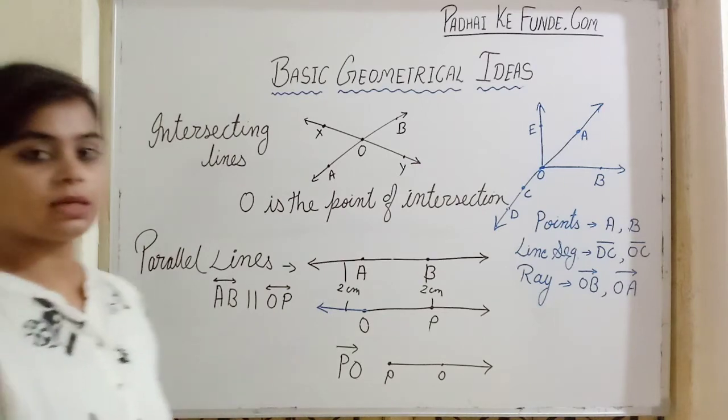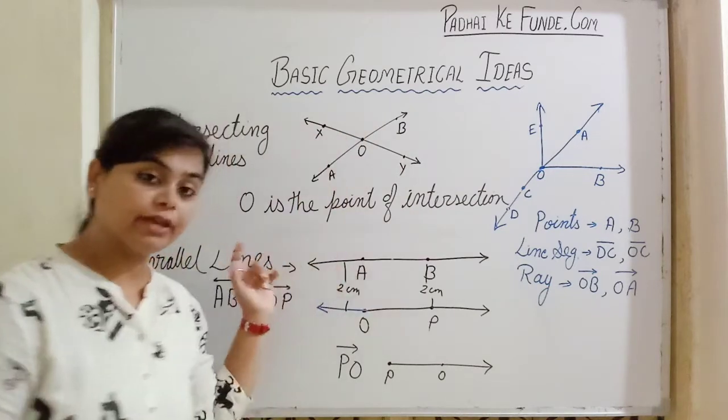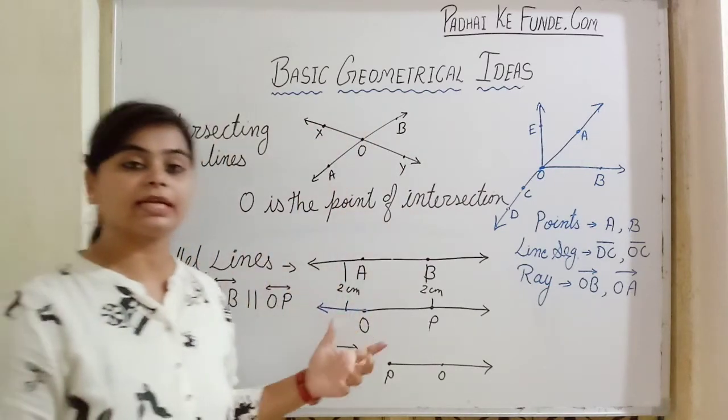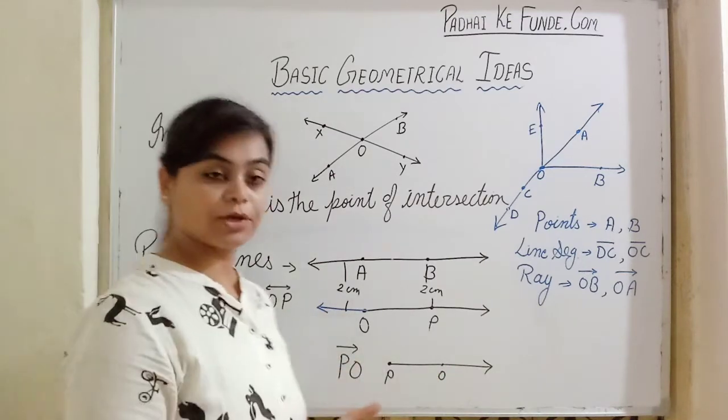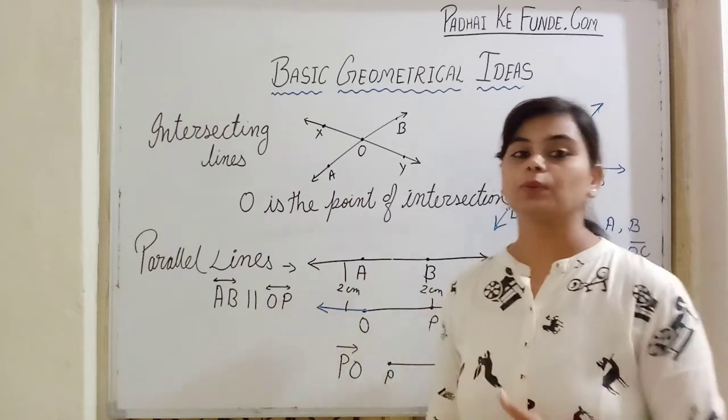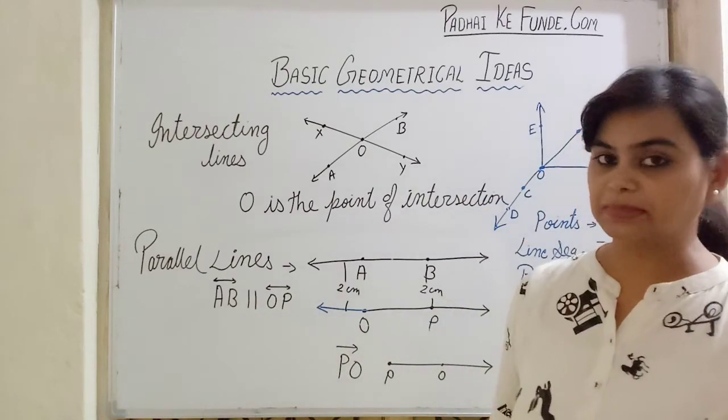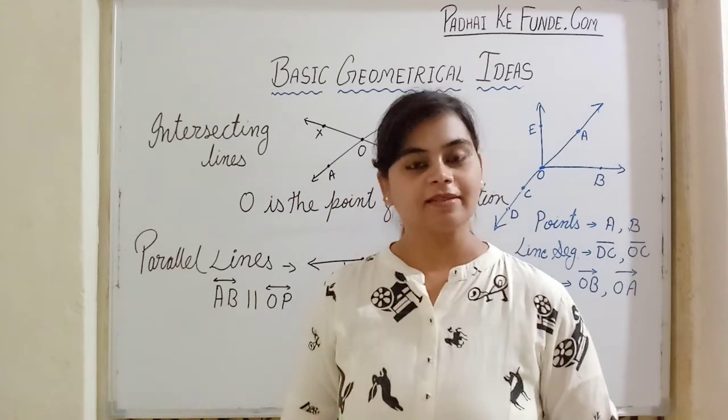OP and AB are parallel lines here and the symbol to represent it is like this - AB is parallel to OP. This is called the relation between the two lines. When two lines cross each other, they are intersecting. If they never cross by expanding at any side, such lines are known as parallel lines. This is the base about lines and line segments in basic geometry. Hope you enjoyed the session. Thank you so much.